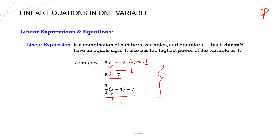If the power of a variable is more than 1 — say for example, x squared, y squared, or z cubed — then these are not linear, because all the variables x, y and z have powers more than 1. So when we build equations, we usually use linear expressions with only one variable.